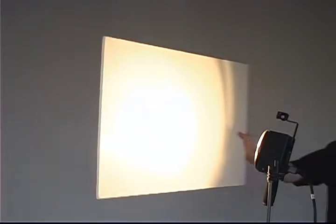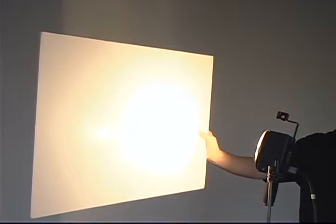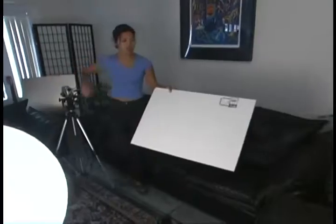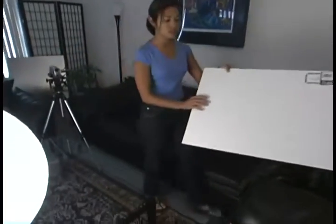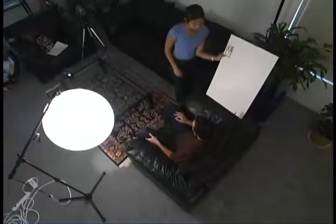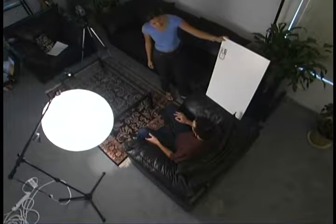A reflector is a soft light source since light is bouncing off the entire surface of the reflector. If you move the key light more to the side, leaving a wider shadow on the front of your subject, the fill will move more to the front, thereby filling in that wider shadow area. A piece of white artboard or foam core available for a few dollars in an arts and crafts store makes an excellent reflector.